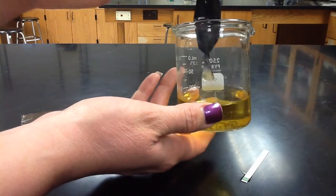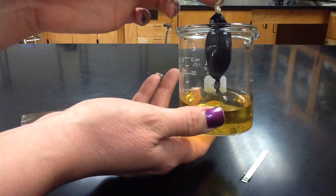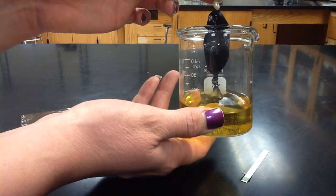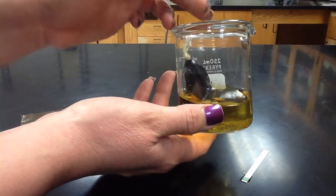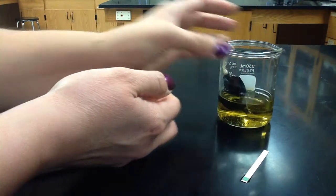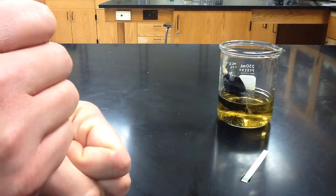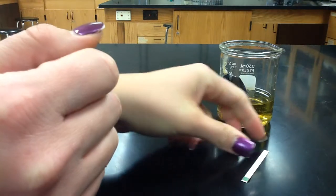And remember, if starch comes in contact with iodine, it turns a dark blue. So what this means is that the iodine has moved into the tube, but the starch did not move out of the dialysis tubing.